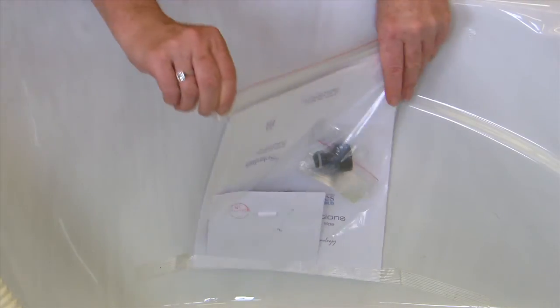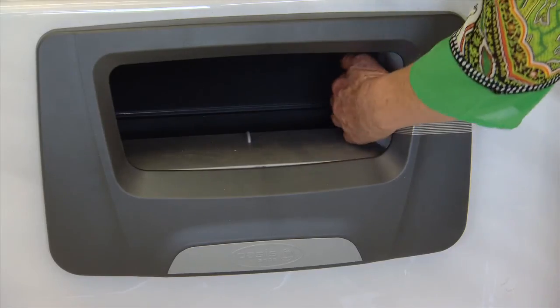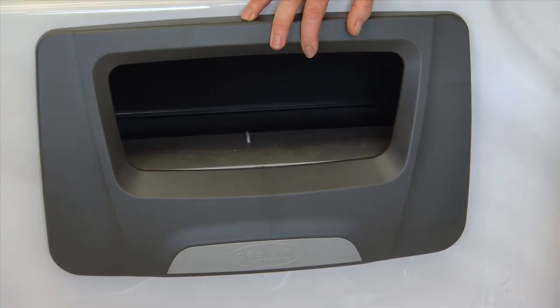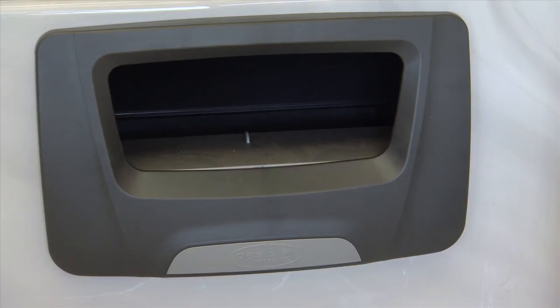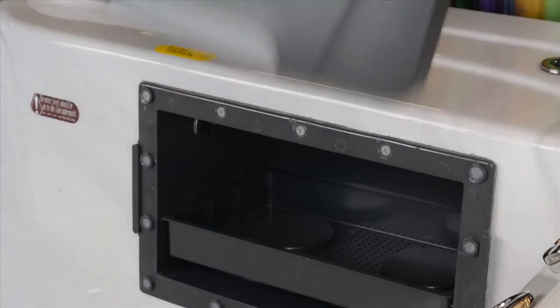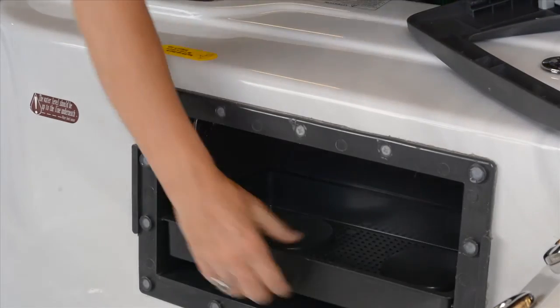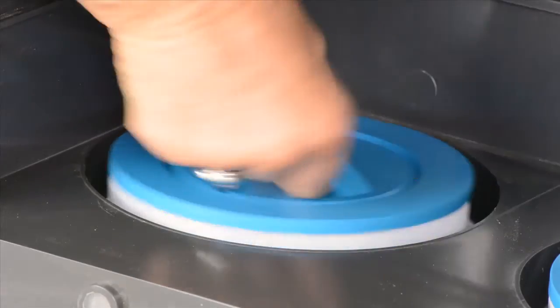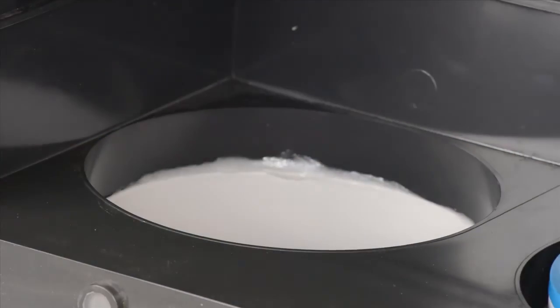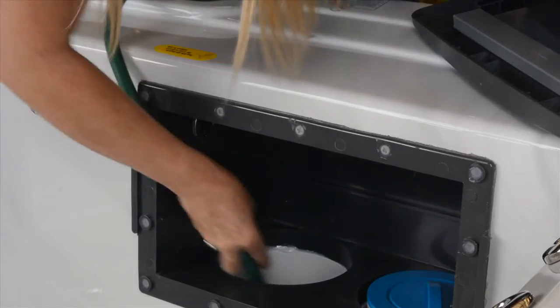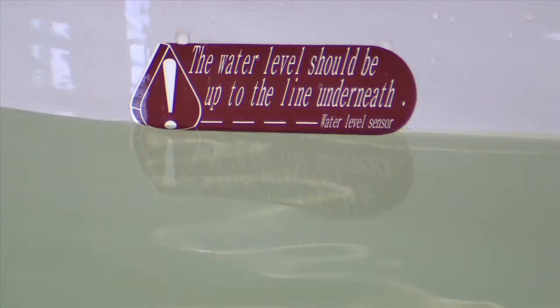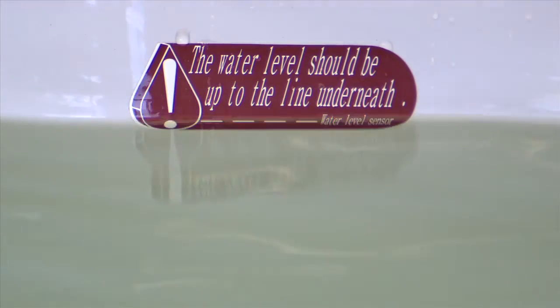Once you've unwrapped your new spa and removed the tape from the filter lid, filter face, and anywhere else, it's time to fill up your spa. Remove the filter face by sliding the cover up and then off. Remove the filter or the left-hand filter with dual filters. Then place your hose where the filter was and fill to the lines shown on the sticker inside your spa.